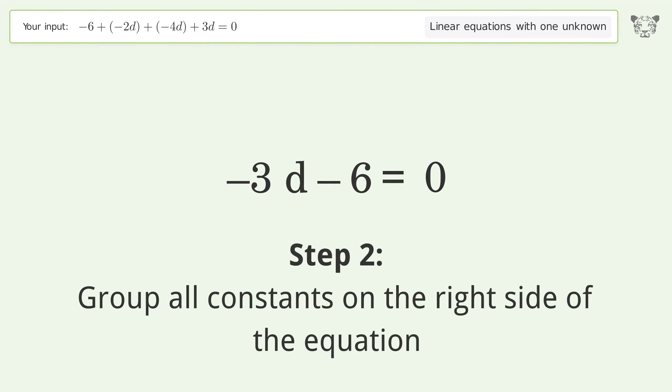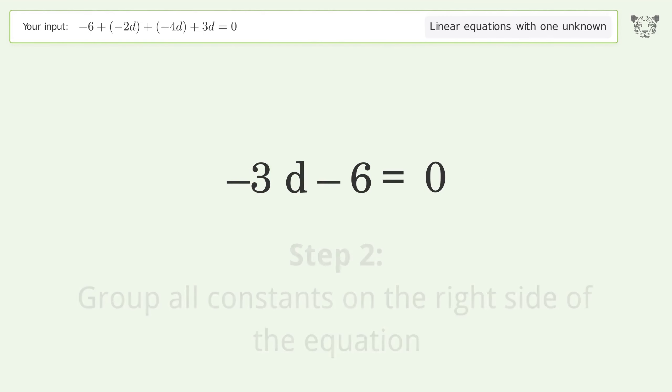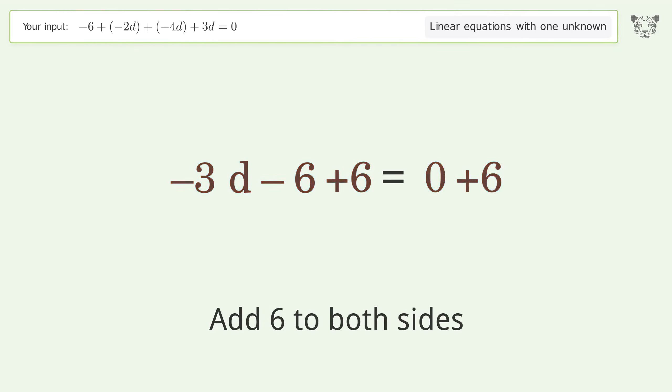Group all constants on the right side of the equation. Add 6 to both sides. Simplify the arithmetic.